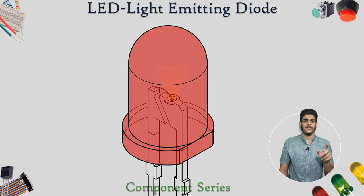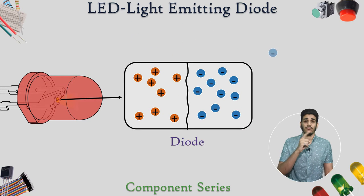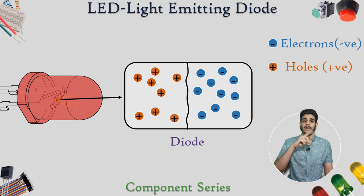Here in the middle of the LED, there is one material called diode which we have seen earlier in the full form of the LED, light emitting diode. The structure of the material is something like that, that on one side there are holes which are represented in orange color and on the other side there are electrons which are in blue.